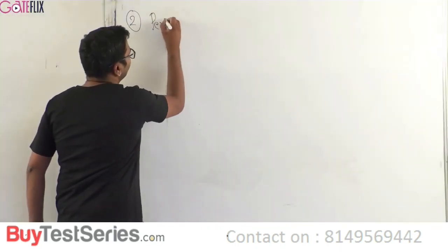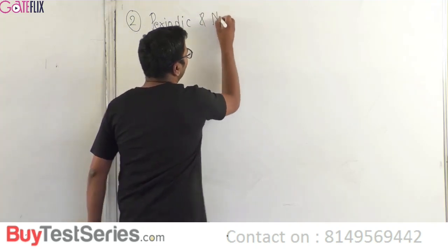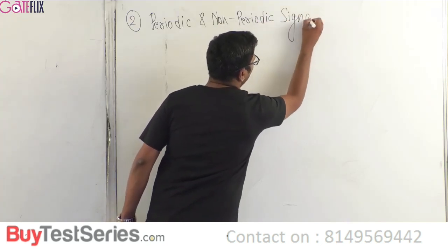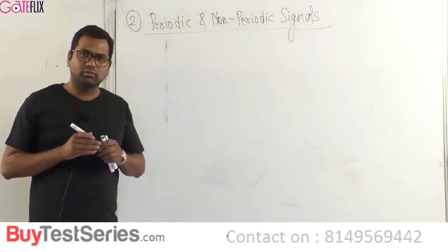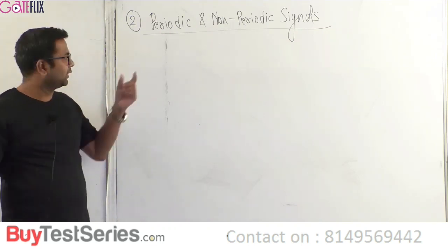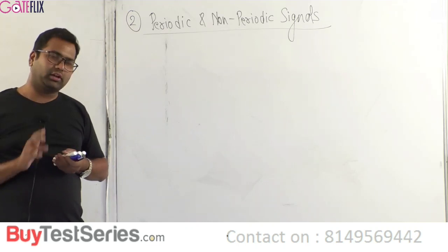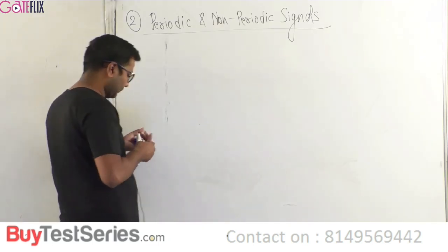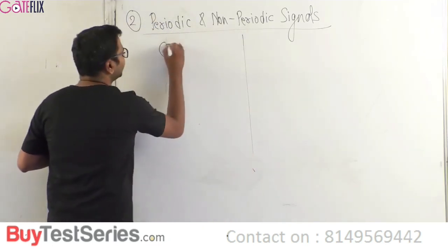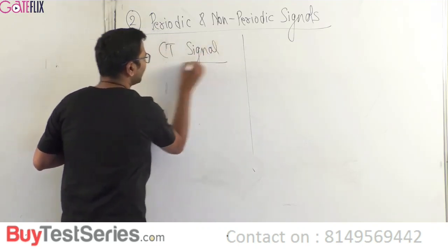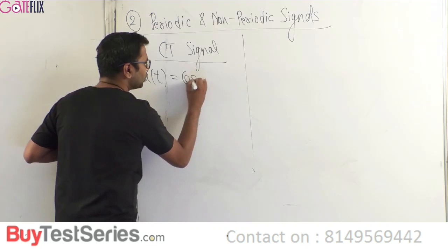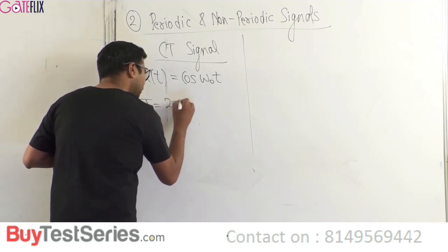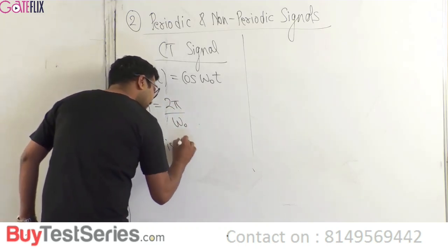The second classification is periodic and non-periodic signals. Periodicity has to be dealt with respect to whether the signal is continuous time or discrete time. For a continuous time signal x(t) = cos(ω₀t), the time period capital T is given by T = 2π/ω₀, where T is the time period.